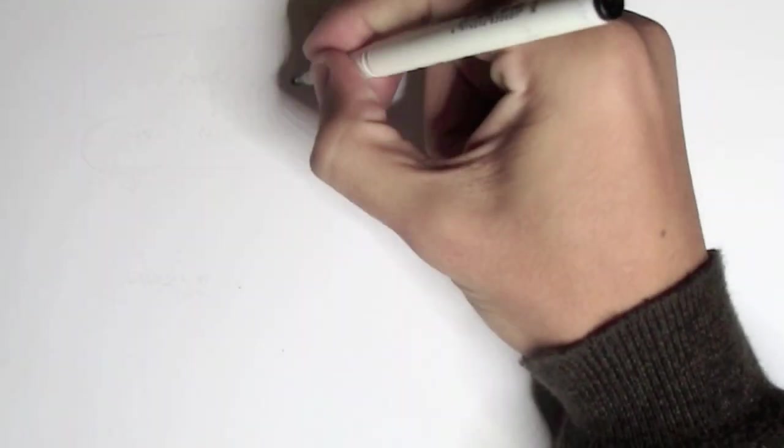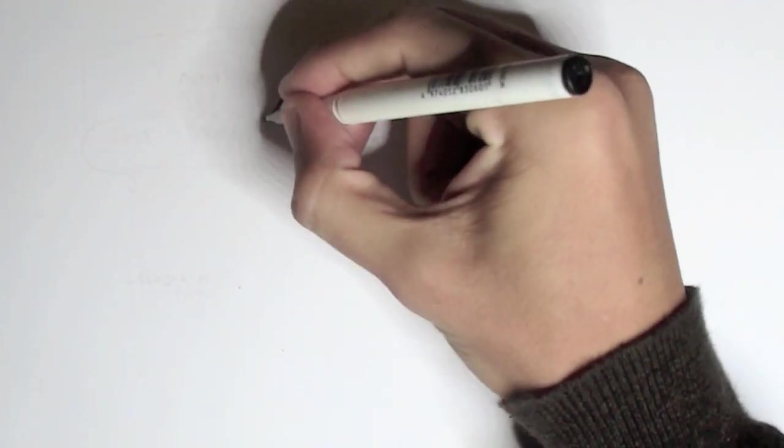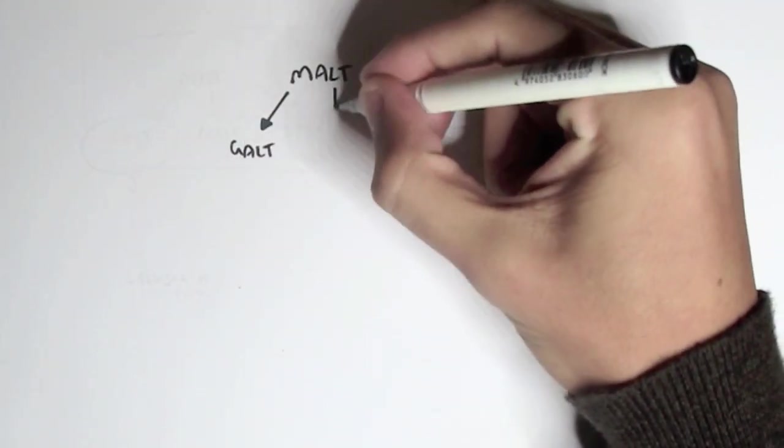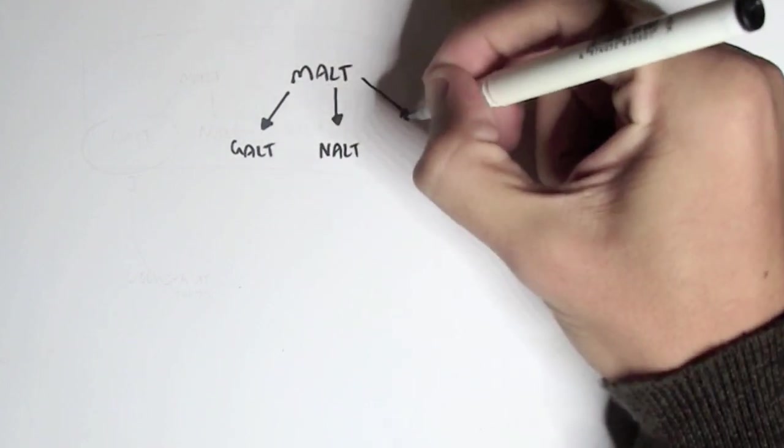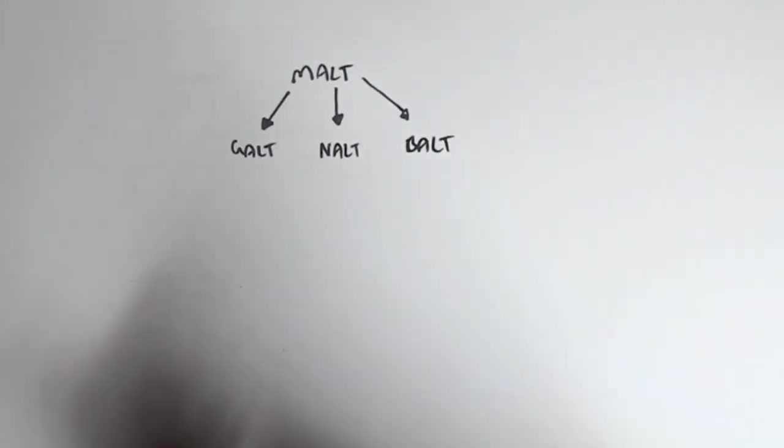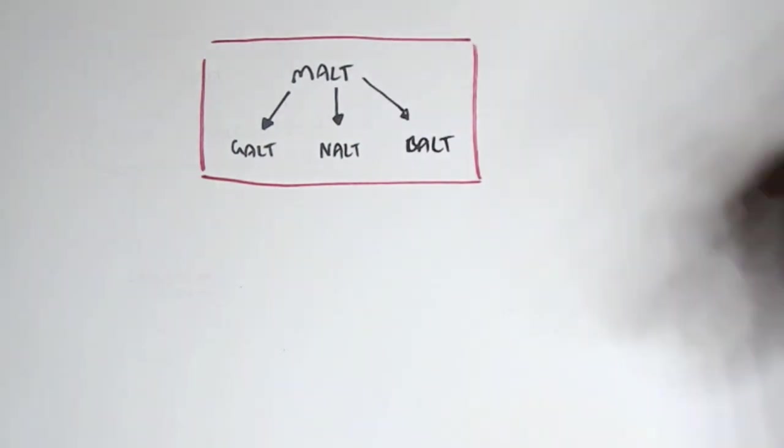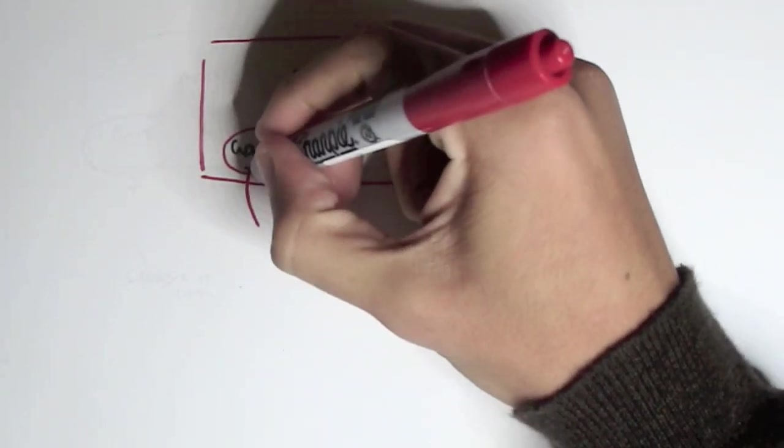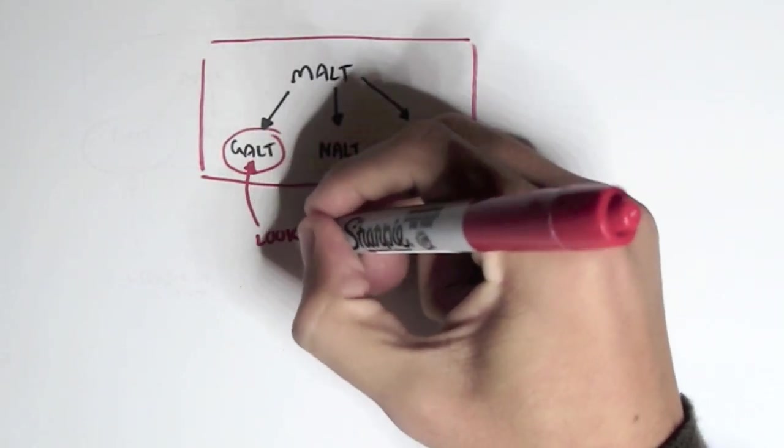So MALT is essentially a big abbreviated word denoting all the other smaller specific mucosal surfaces. So MALT can be GALT, which is specifically the gut, can be NALT, which is specifically the nasal cavity, or can be the BALT, which can be specifically the bronchus, the lung. In this series of videos, we will be specifically looking at GALT, the gut-associated lymphoid tissue, as well as the gut immune system and immune response.